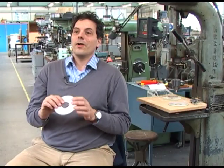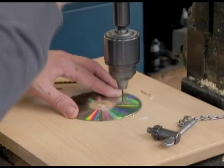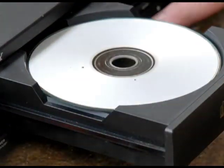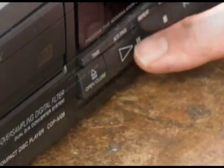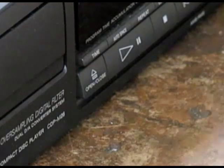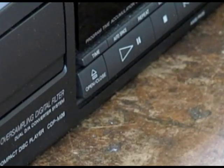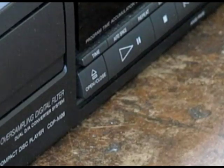CDs are designed to withstand scratches and dents that would happen in normal household use. So even if I draw a hole in the CD here, depending on the size of the hole, the CD should still be able to play as if nothing had happened. The way it does that is by using error control coding.